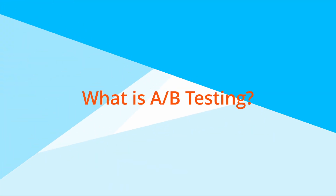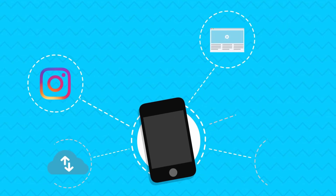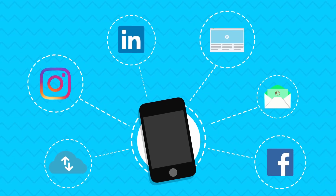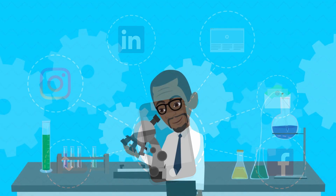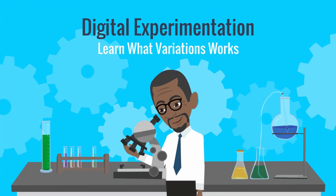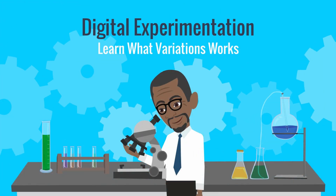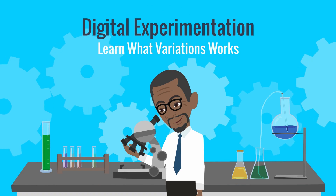A/B testing happens on your digital spaces: your websites, your apps, your social media channels, your emails, your paid advertising. Think of it like digital experimentation. Each test helps you learn which variation is better than the others.